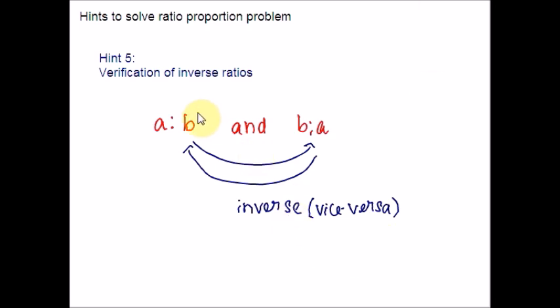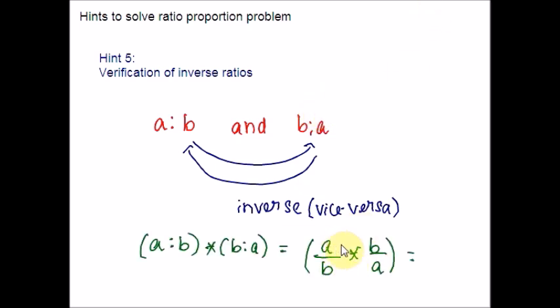Hint 5: Verification of inverse ratios. If two ratios are inverse to each other, then their product must be equal to 1. That is, A is to B and B is to A are inverse to each other. Then A is to B times B is to A — let me write the ratios as fractions. Proceed with fractional multiplication: multiply the terms in the top row and in the bottom row. You get AB over AB, which is 1. Thus the inverse ratio is verified. If your question directs you to verify the inverse ratio, rewrite them as fractions, multiply, simplify, and you should get 1.